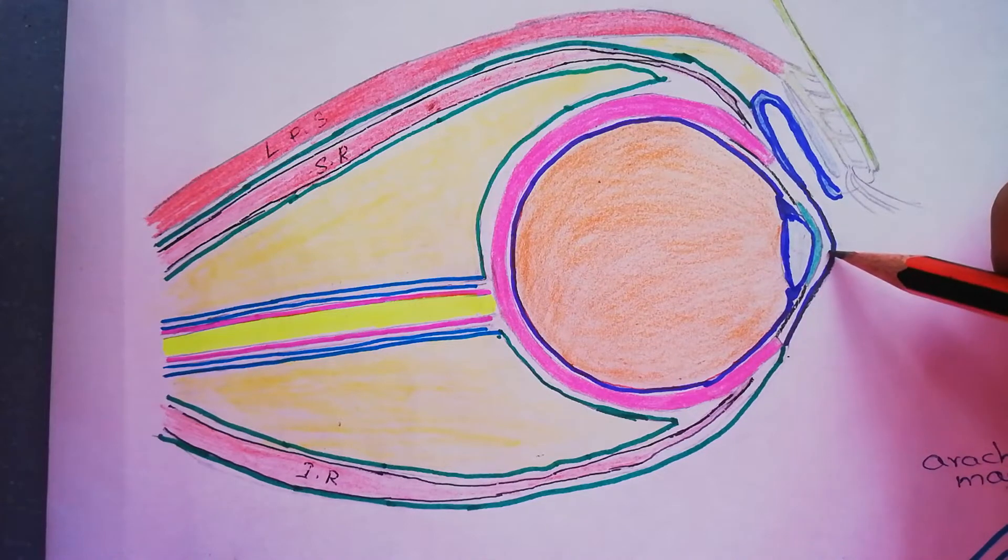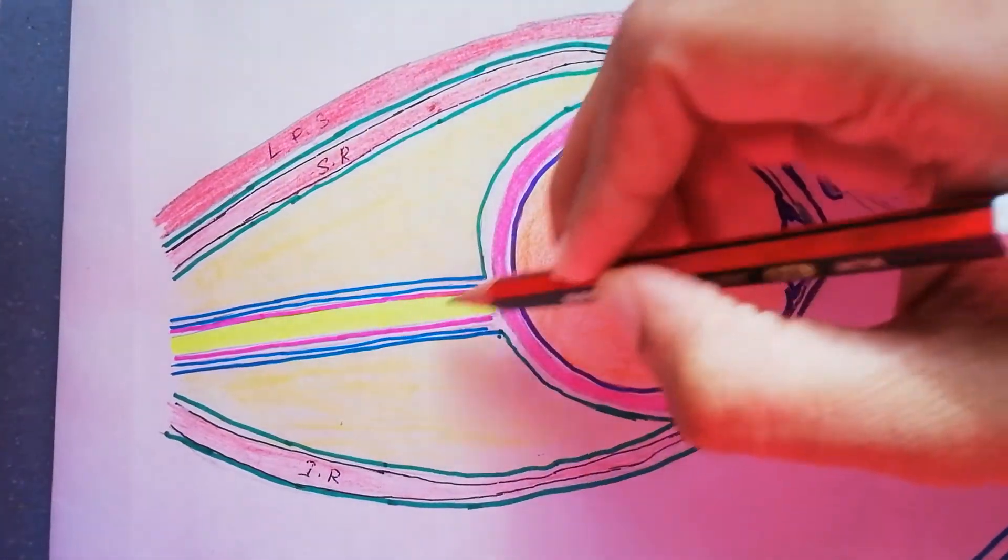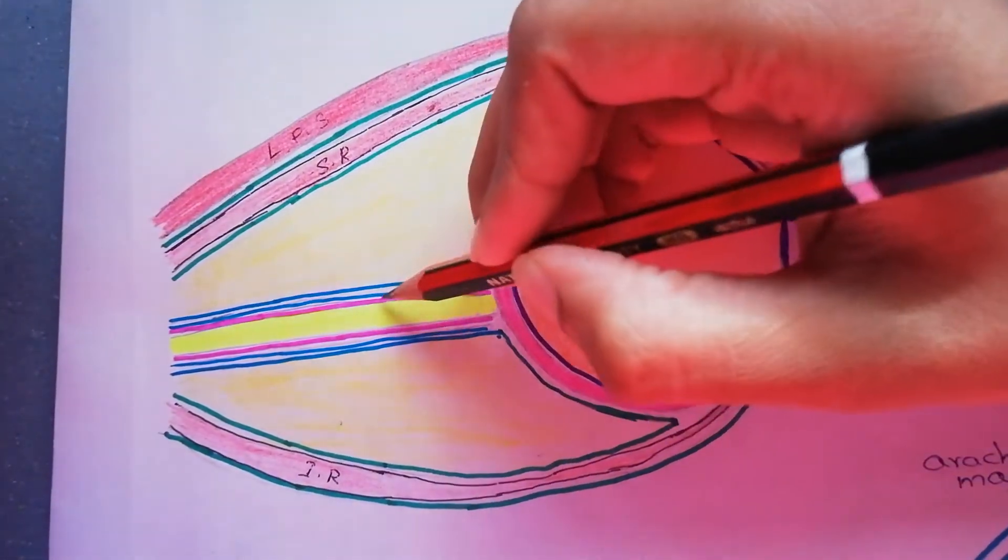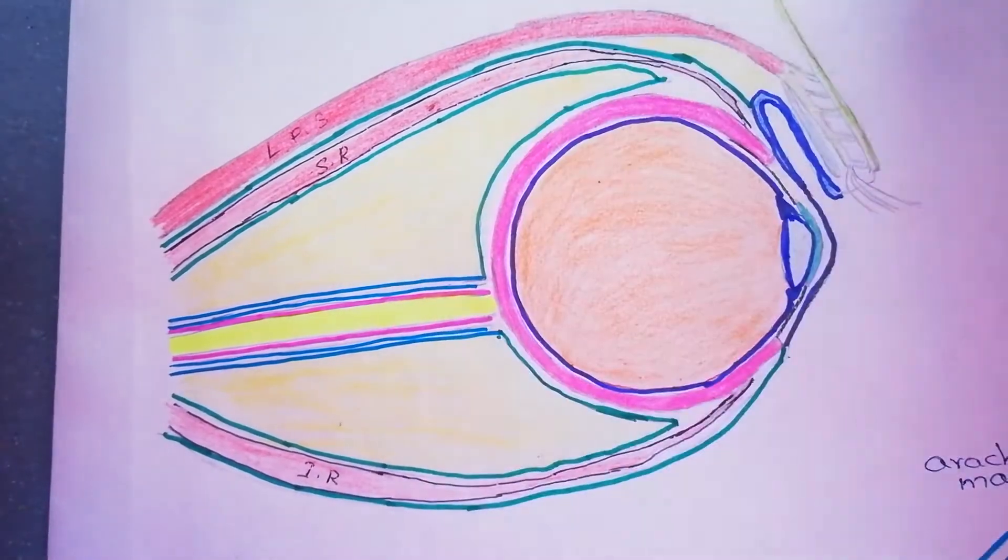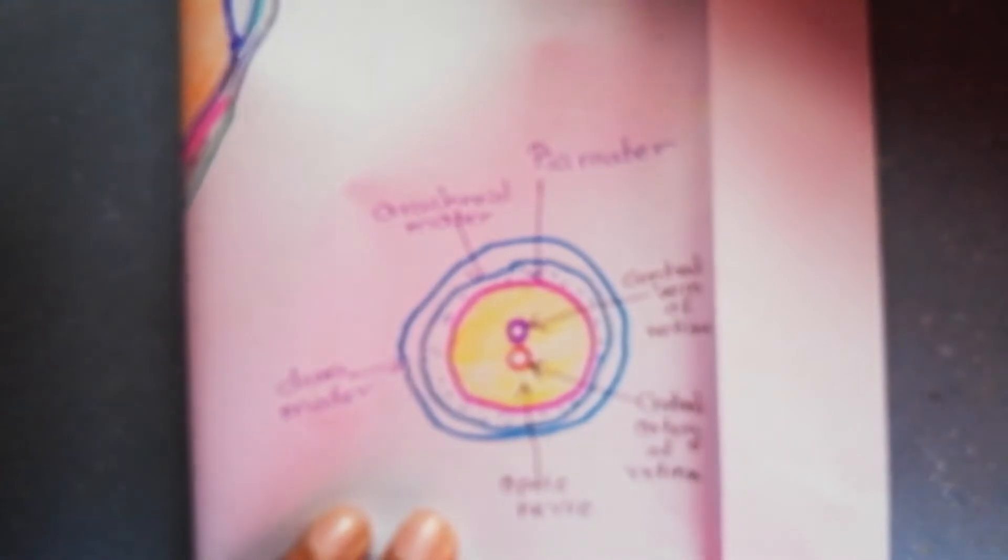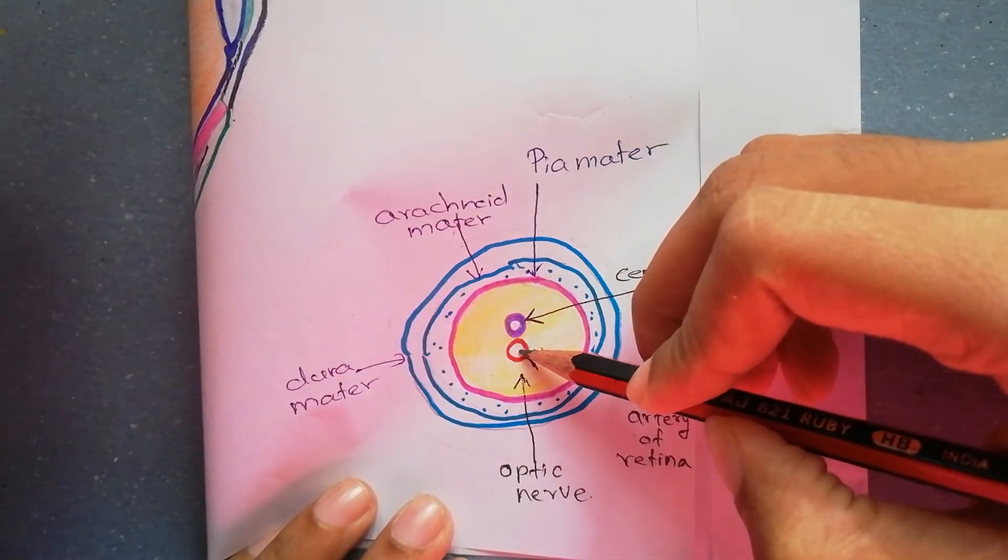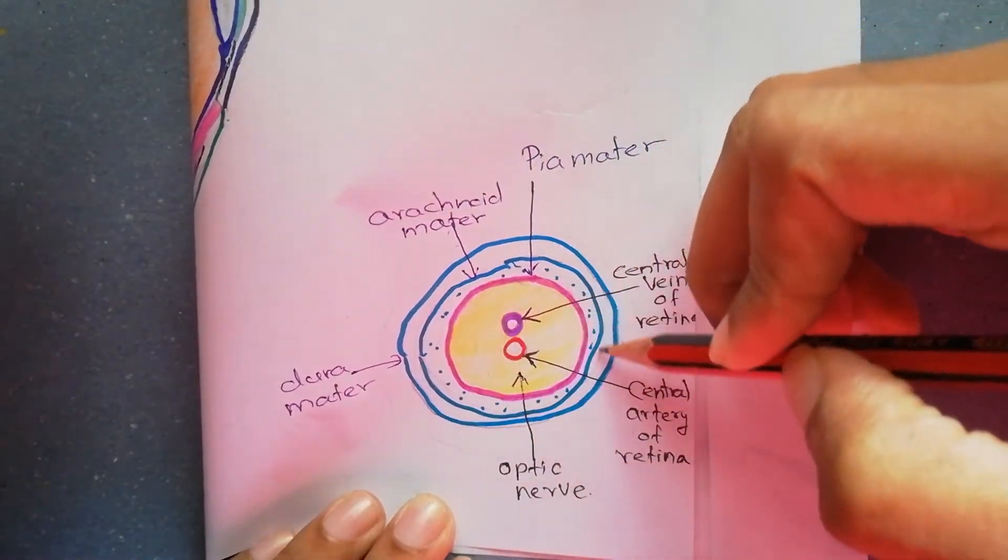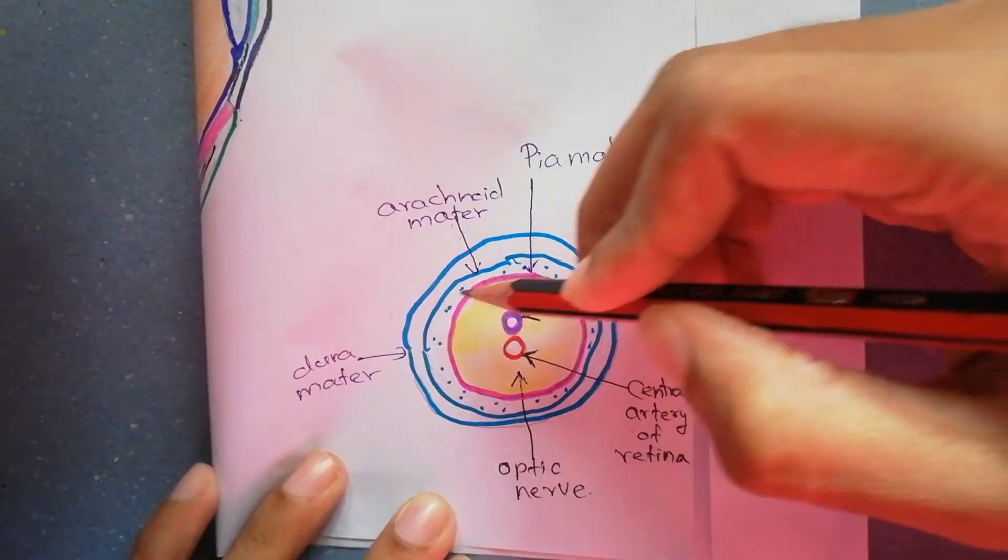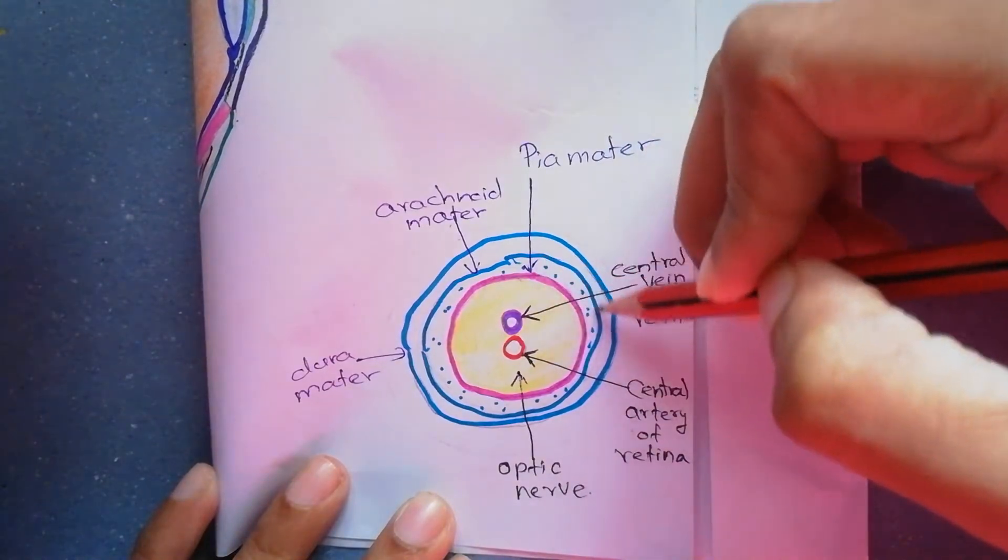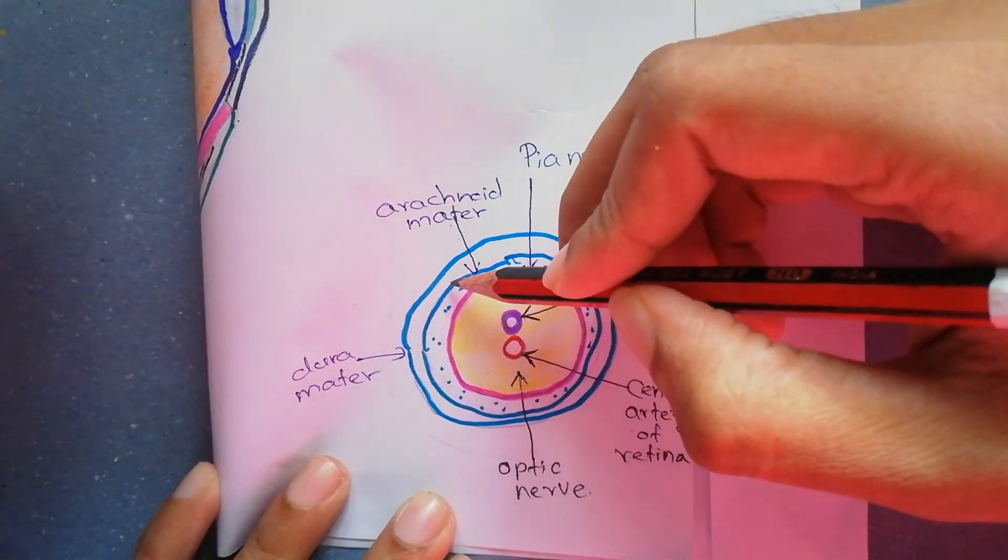Here comes the optic nerve. It is covered by three meninges of the brain. If we get a cross section, this is the nerve. Here is the central vein and artery of the retina. First it is surrounded by the pia mater, then subarachnoid space and arachnoid mater, finally the dural mater.